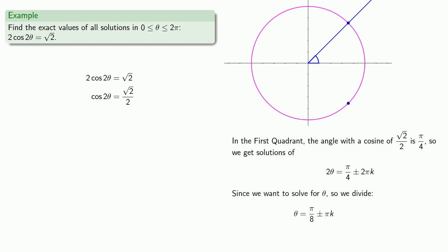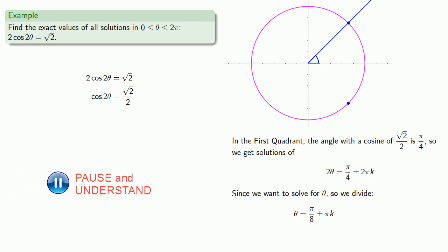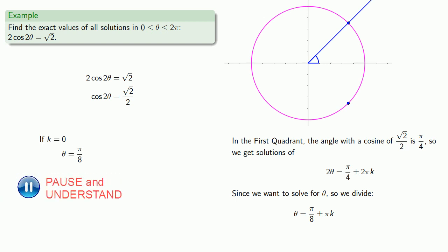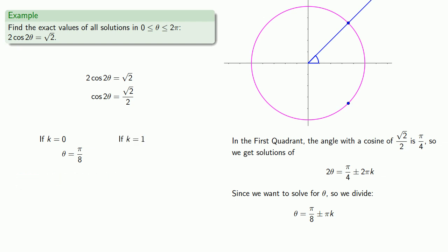Since we want all solutions in the interval between 0 and 2π, we choose values of k so that θ ends up in this interval. If k = 0, θ = π/8, which is in the interval. If k = 1, θ = π/8 + π = 9π/8, which is also in the interval. If k = 2, we'd be adding 2π to π/8, which is guaranteed to put us outside the interval, so we don't need to consider higher values of k.